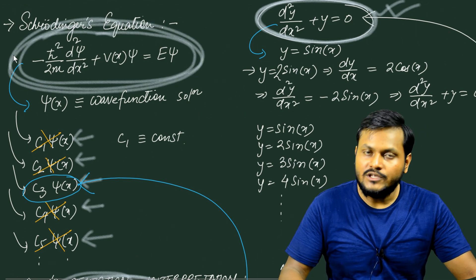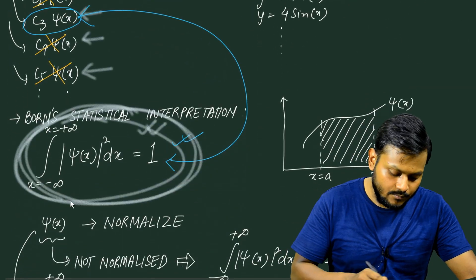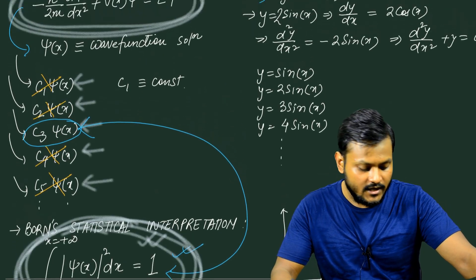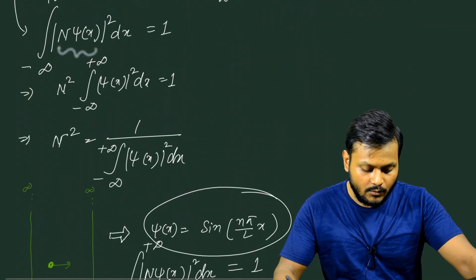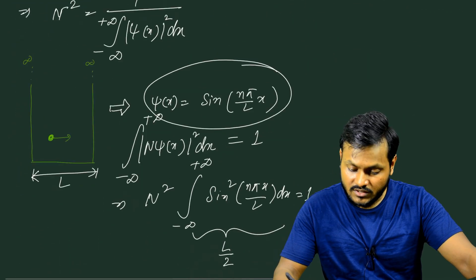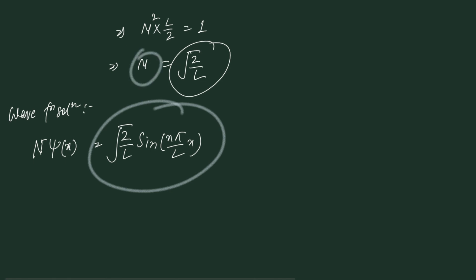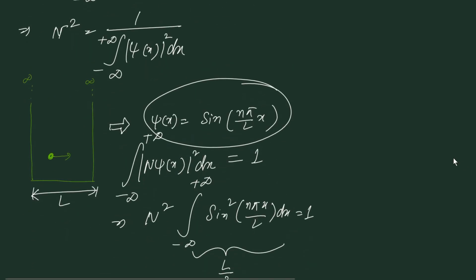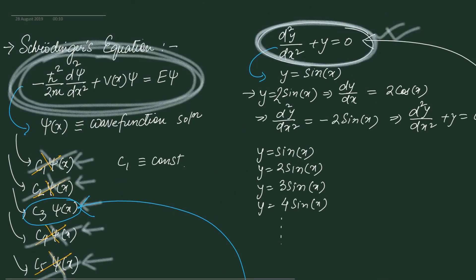As demonstrated, not all solutions of the Schrödinger's equation can represent the physical particle. There is an additional condition — the Born interpretation — that must be satisfied. To ensure the mathematical solution gives a physical solution, we multiply by the normalization constant. The normalization constant differs for different potentials; what was derived here is specific to the infinite square well. You normalize a wave function to find the one solution that can physically represent the particle and discard all others.